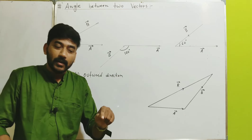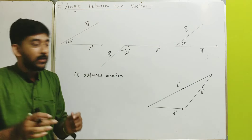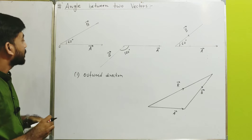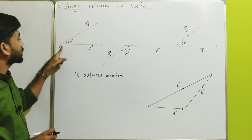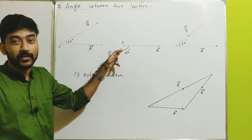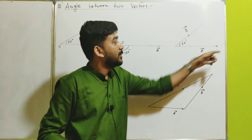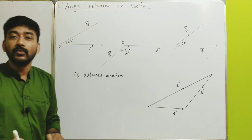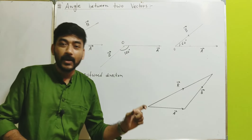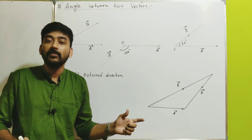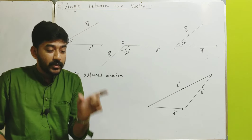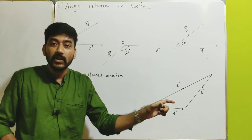Now if we look at this figure, for the first point, vectors A and B are both outwards — that's clear. But at the second point, vector B is inward and vector A is outwards, so they are not both outwards. At the third point, vector B is also inward while vector A is outwards. So we have to make the vectors outward at that point first. For this purpose, we can use the shifting property of vectors: a vector can be shifted from one place to another in parallel without changing its direction.